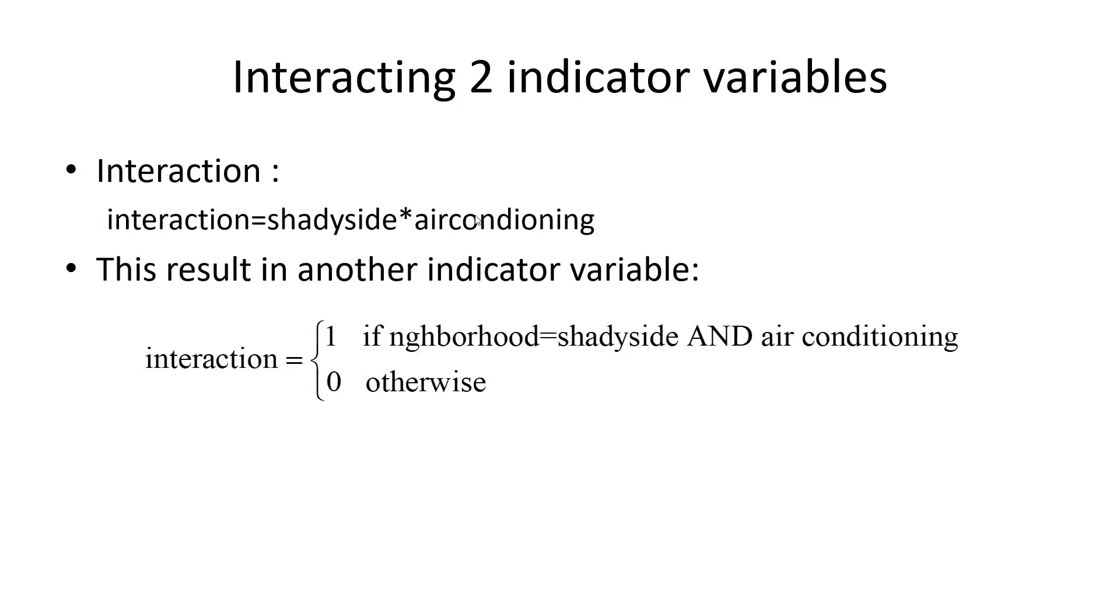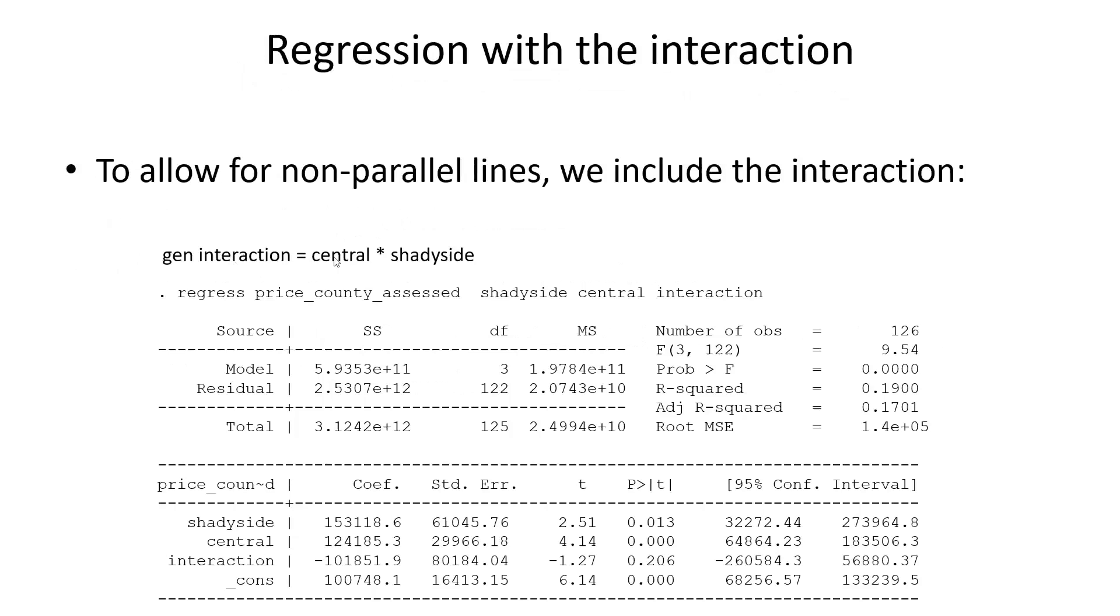What is the meaning of the interaction? Well, if either one of those indicators is zero, then the whole thing is zero. If they are both one, so if I have air conditioning and the neighborhood is Shadyside, then I get the interaction here to be one. Here I'm creating the variable, just multiplying them. Then I'm regressing, just adding this third variable in here, and down there you get the effects. Now, what is significant? Central air conditioning is significant and adds now $124,000 on average to the house price. Shadyside is still significant and adds $153,000 on average. Those values have changed a little bit, and the interaction is not significant. So we don't really want to interpret the coefficient. These two coefficients have changed because we have a different coefficient in here, but it's not significant.